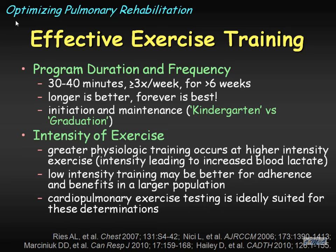Program duration and frequency — typically 30 to 40 minutes at least three times a week for at least six weeks to get benefit for patients. Longer is better, forever is best, but there's a balance between resources and the burden of patient numbers. There's a philosophy of patients going through pulmonary rehabilitation and graduating, but another thought is that rather than graduating, the eight-week period is perhaps kindergarten — it leads to lifelong changes and exercise that we have to enable patients to do. In Calgary with about a million people and 11 centers, after graduating from an eight-week program, at six months only 11% were still exercising. So 90% of their patients stopped exercising.